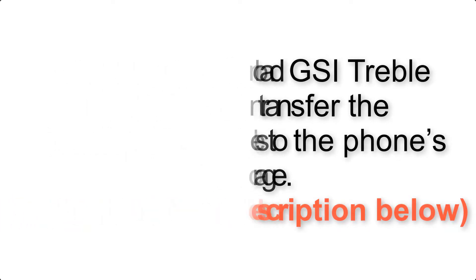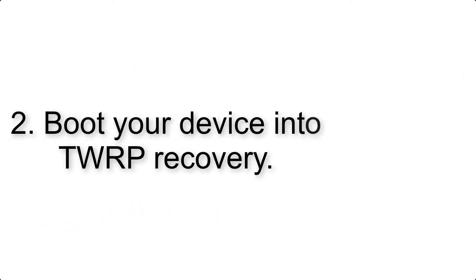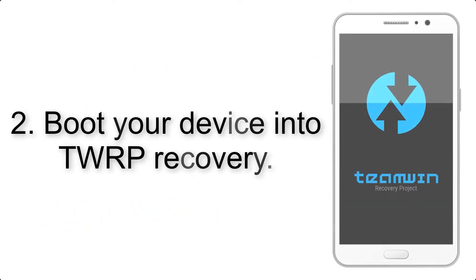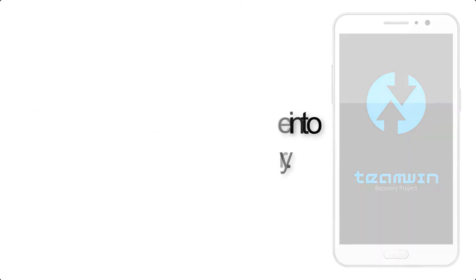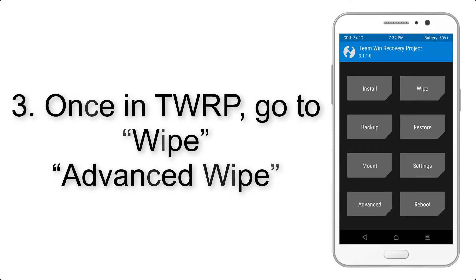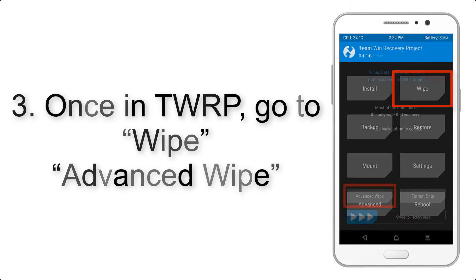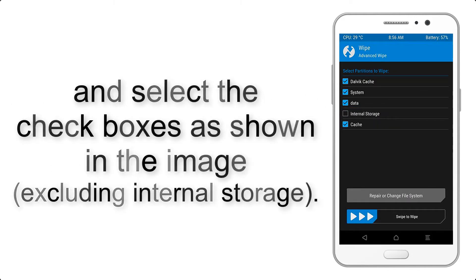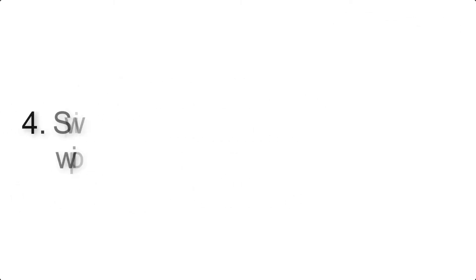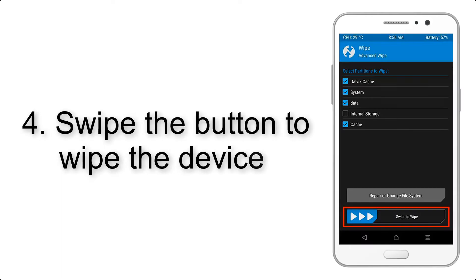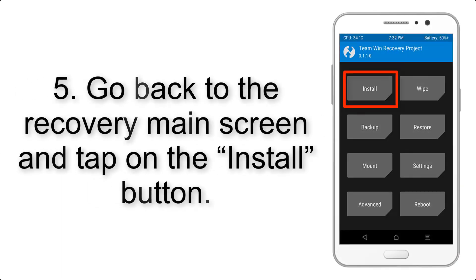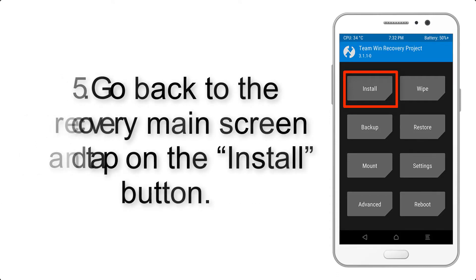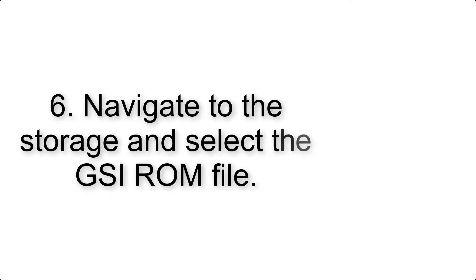Step 2: Boot your device into TWRP recovery. Once in TWRP, click on Wipe, then Advanced Wipe, and select the checkboxes as shown in the image, excluding internal storage. Step 4: Swipe the button to wipe the device.